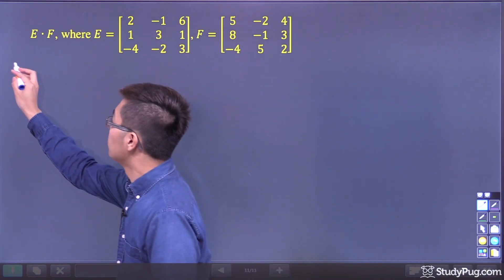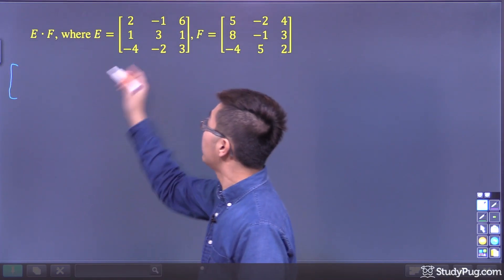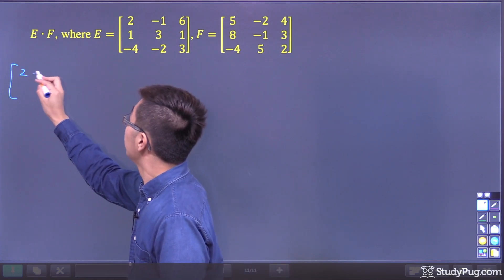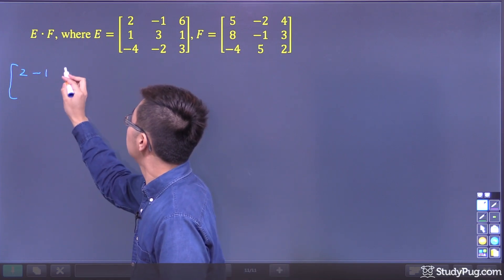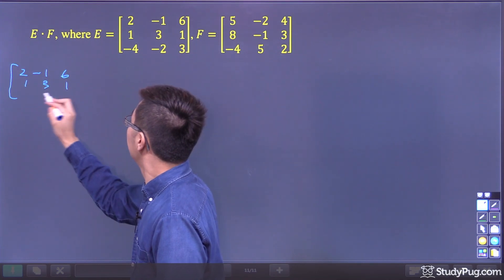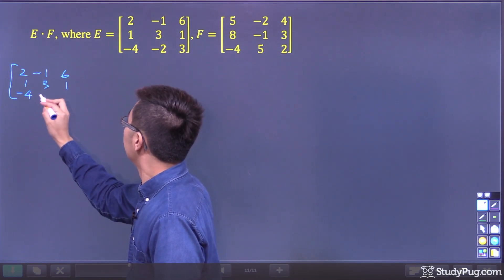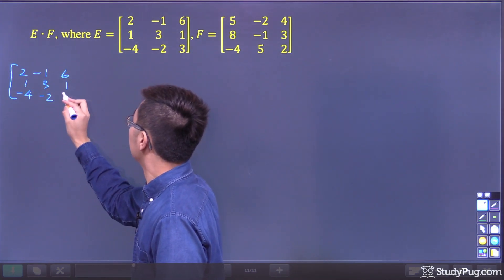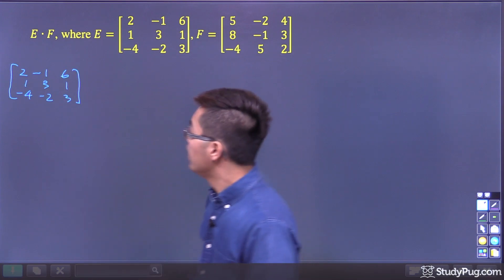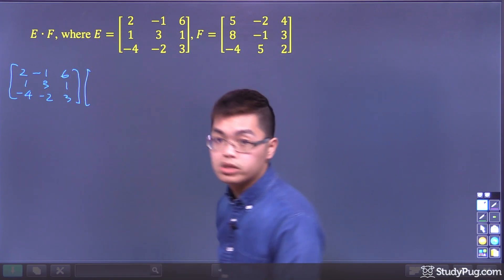Matrix E has the values: 2, negative 1, 6, 1, 3, 1, and negative 4, negative 2, 3. That's matrix E, and we're multiplying it with matrix F.